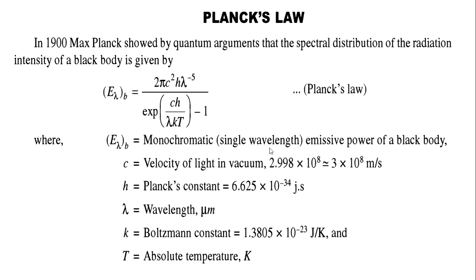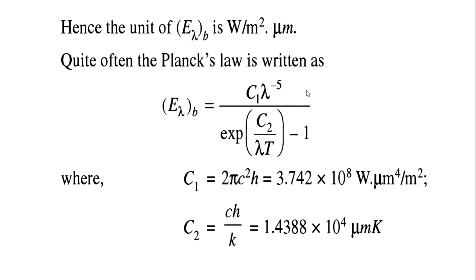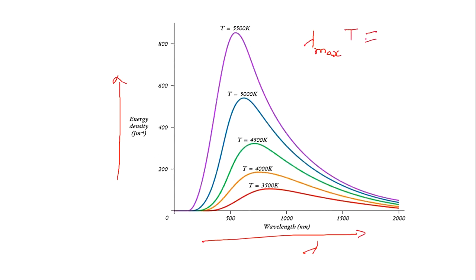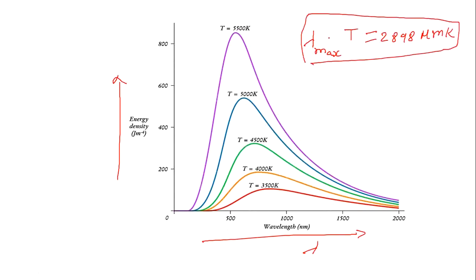Planck's Law: If you go to the heat transfer data book, page number 82, you will find the equation. Write the equation and explain it — that is Planck's Law. Wien's Law of Displacement: In the examination, explain Wien's law of displacement. The y-axis has energy density and the x-axis has wavelength lambda. The product of maximum wavelength and absolute temperature equals 2898 micrometer-Kelvin.